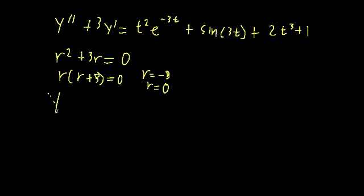Which means our homogeneous solution is just going to be c1 e to the negative 3t plus c2 times e to the 0t. And e to the 0 power, that's just going to be 1. So just c1 e to the negative 3t plus c2.